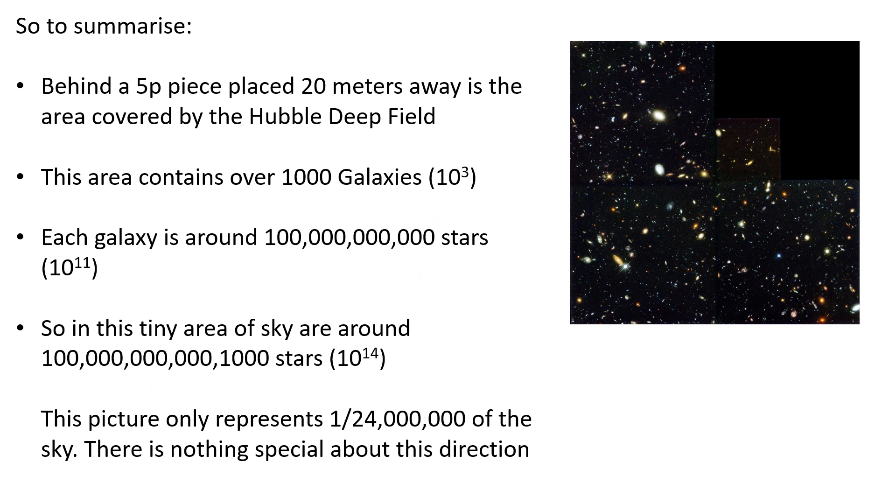Behind our 5p piece 20 meters away, there are of the order a thousand galaxies, and each of those galaxies contains something around a hundred billion stars. So that means that in that tiny area of sky there is something like a hundred thousand billion stars. But that picture only represents one in 24 million of the entire night sky, and there was nothing important about that direction. And I for one can say that certainly makes my head hurt.